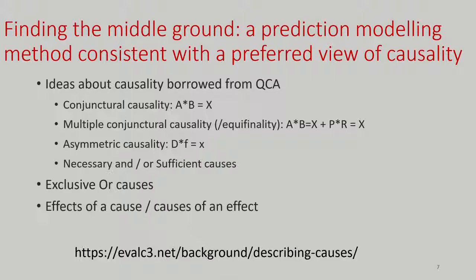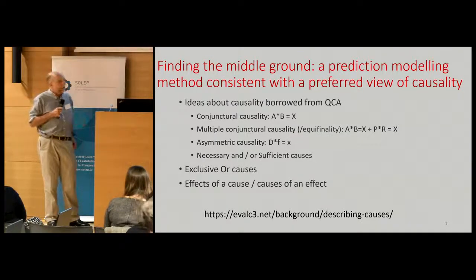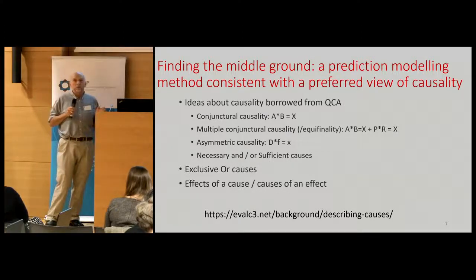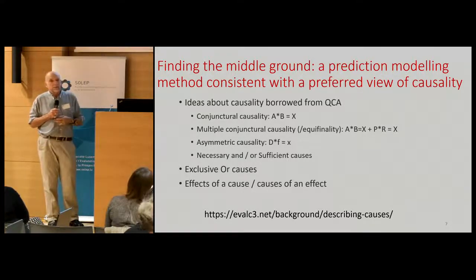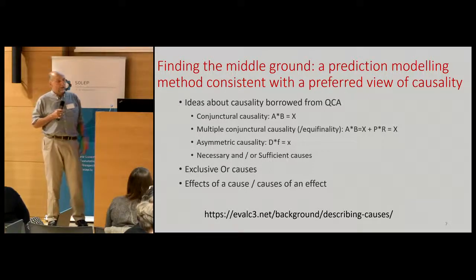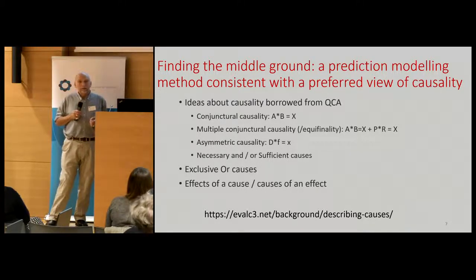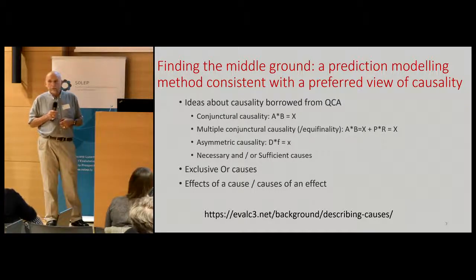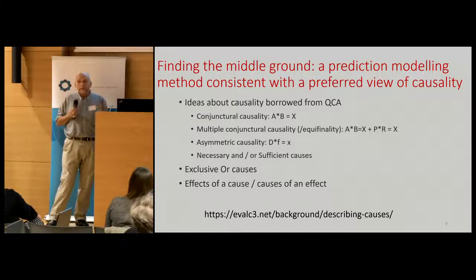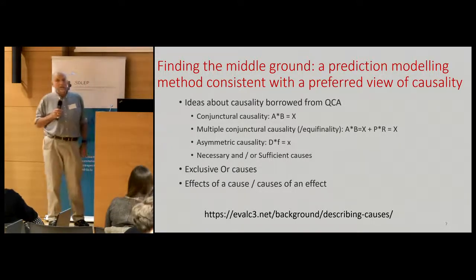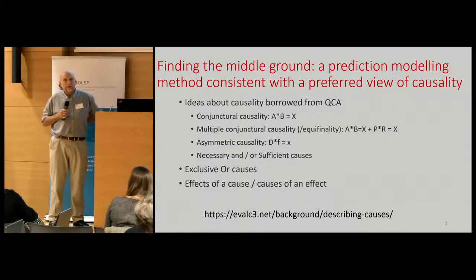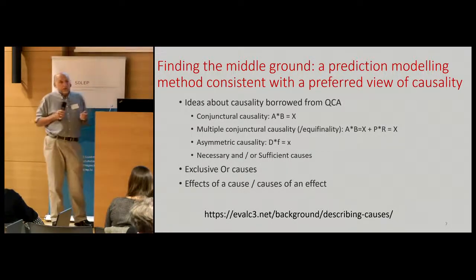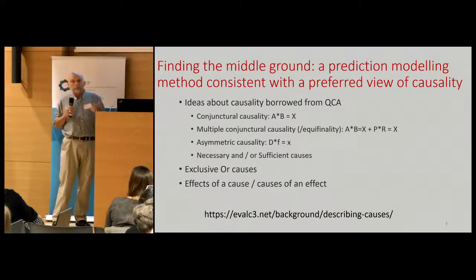What I'm particularly interested in is finding predictive modeling approaches consistent with a particular approach to causality. There are many different views on causality, but the one that most interested me — and got me on this journey — comes from qualitative comparative analysis, QCA. Could I have a quick show of hands — is anyone familiar with QCA? Okay, about four people. This is a type of analysis coming from political science in the 1980s and is now fairly widely used among some evaluators in Europe and America.